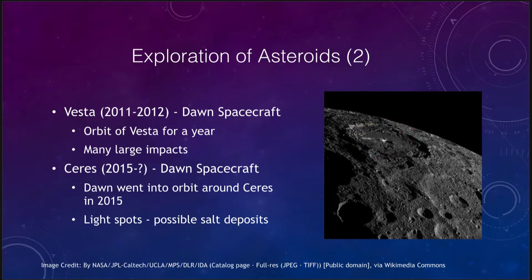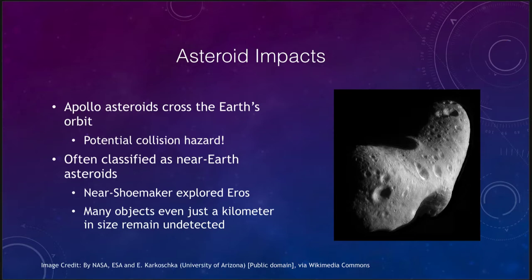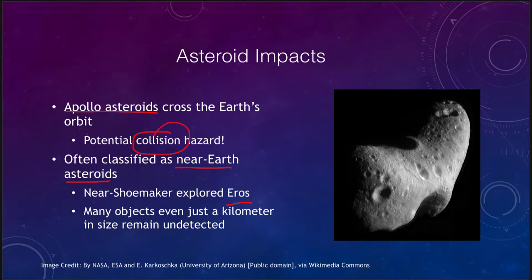Now let's look at the possibility of asteroid impacts. The Apollo asteroids are the ones to watch, especially for the Earth, since they cross the Earth's orbit and are therefore a collision hazard. We sometimes also call these near-Earth asteroids. Eros was explored by the NEAR Shoemaker spacecraft, giving us a look at one of these near-Earth asteroids. However, there are many of these we've cataloged, and there are far more — including many that are just a kilometer or so in size — that still remain undetected and could cause significant damage.